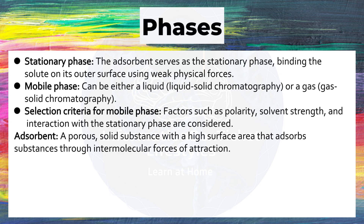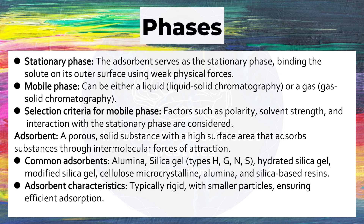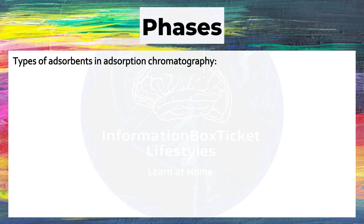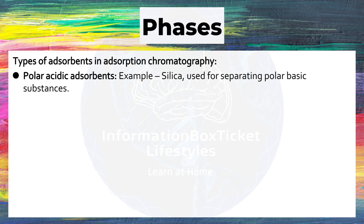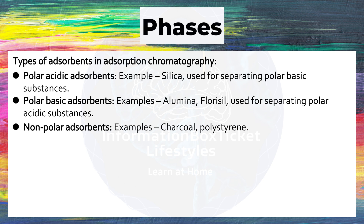Adsorbent: A porous, solid substance with a high surface area that absorbs substances through intermolecular forces of attraction. Common adsorbents include alumina and silica gel. Types include hydrated silica gel (HGNS), modified silica gel, microcrystalline cellulose, alumina, and silica-based resins. Adsorbents are typically rigid with smaller particles, ensuring efficient adsorption. Types classified by polarity: polar acidic adsorbents (e.g., silica) for separating polar basic substances; polar basic adsorbents (e.g., alumina, fluorosil) for separating polar acidic substances; and nonpolar adsorbents (e.g., charcoal, polystyrene).